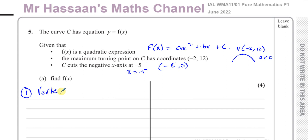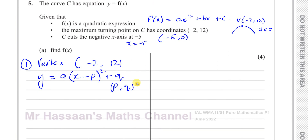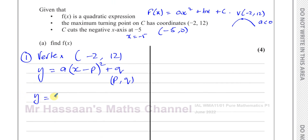Starting with Method 1 using the vertex. The vertex is negative 2 and 12. When we have a quadratic written in completed-the-square form, we can read the vertex directly. So we can write: y equals A times x minus p squared plus q, where (p, q) are the coordinates of the vertex. Applying that here, y equals A times x plus 2 squared plus 12. The vertex of this equation is negative 2, 12, as required.